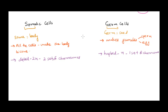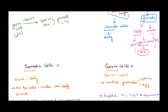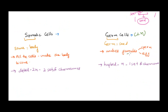One important point: students say somatic cells are diploid and germ cells are haploid, but you need to understand this clearly. Germ cells are the cells present in the gonads — testes for males and ovaries for females — and they undergo gametogenesis. Germ cells are not haploid to begin with; they start as diploid. They undergo meiosis and at the end produce four gametes from one single cell, and those gametes will be haploid.